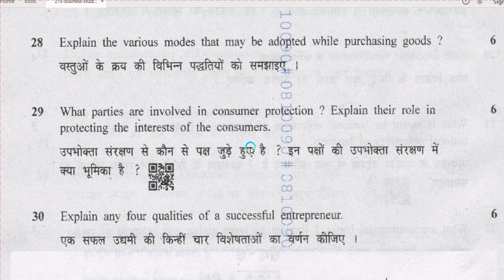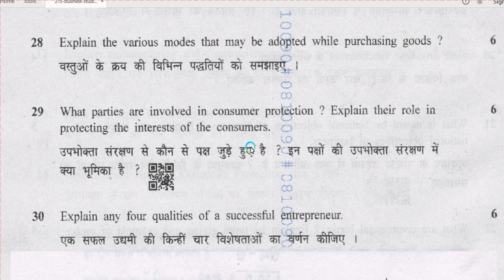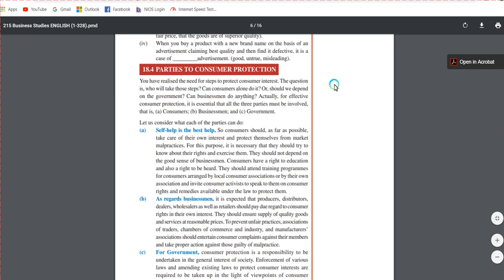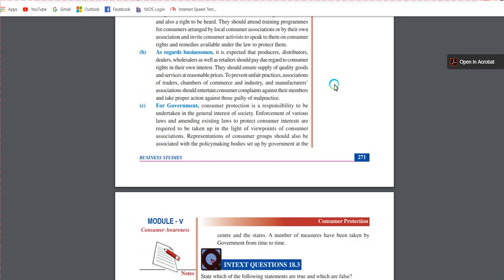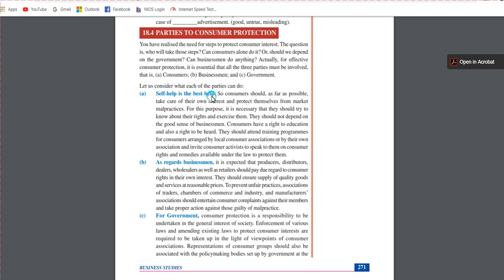Question number 29: what parties are involved in consumer protection — explain their role in protecting the interest of consumers. There are three parties: first, consumers themselves (self-help is the best help); second, businessmen, service providers, and manufacturers; and third, the government. Write their names and mention their role in protecting consumer interests. Refer to page number 271 for the three parties to consumer protection.